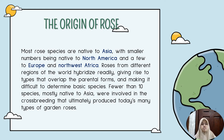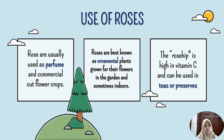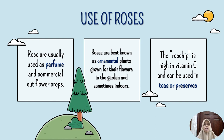The uses of roses. First, roses are usually used as perfume and commercial cut flower crops because of their delightful fragrance. Second, roses are best known as ornamental plants grown for their flowers in the garden and sometimes indoors. Third, rose hip is high in vitamin C and can be used in teas or as a preservative. Rose hip is a special fruit from the genus Rosa rugosa.